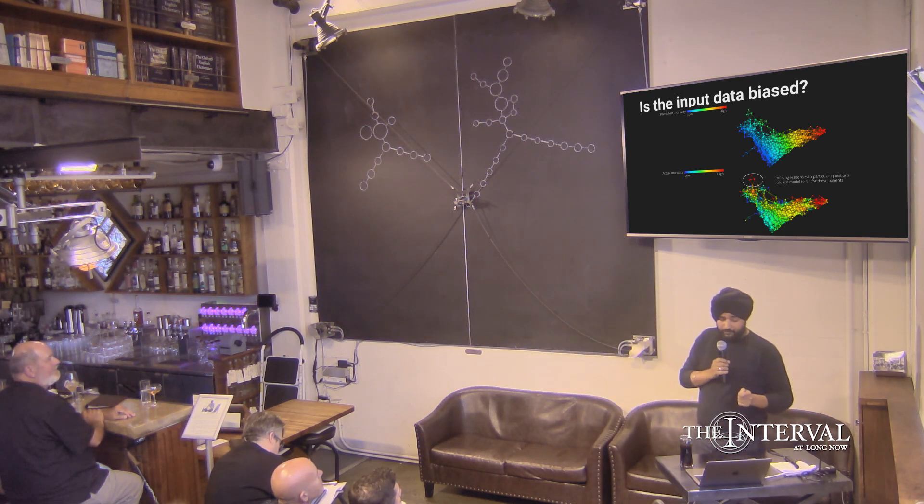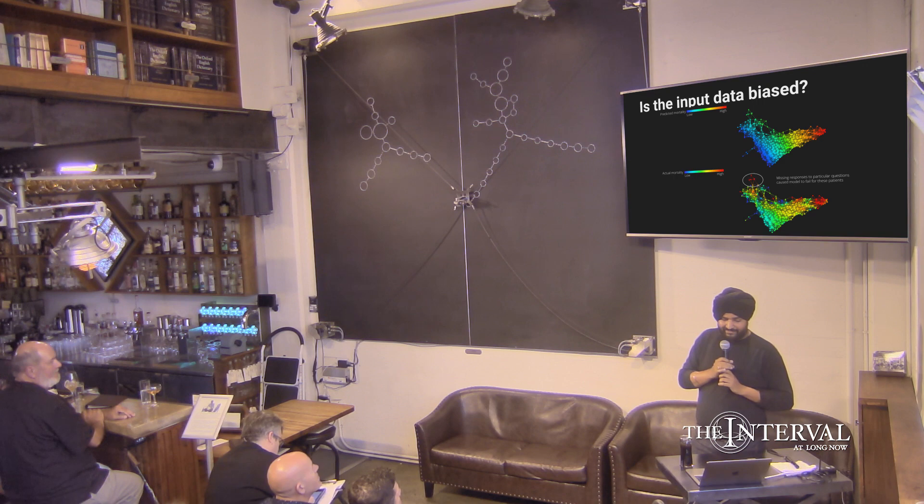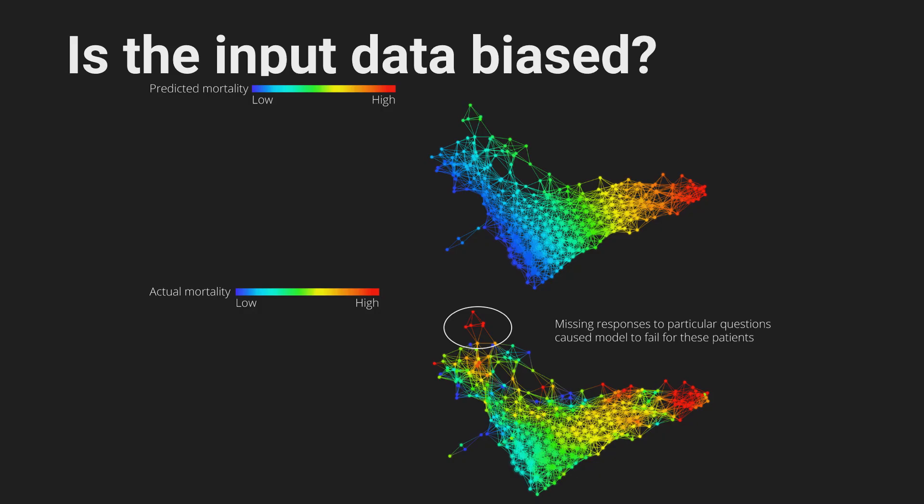The one particular area that I want to point out is circled up here, which is the model says it's totally fine, no problem, and those people all end up basically not surviving the ER experience. So the question is why. It turned out that these people were delirious enough that they couldn't answer a few questions on the survey. So missing data was causing this problem in the model. This is an example of how do we detect bias in the input data to the models where we can then go hopefully correct it either in some human way or process or in some systematic way.